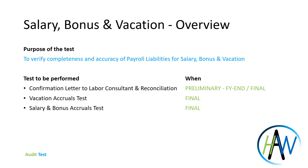The optimal procedure to perform to mitigate the risk of material misstatement is a matter of professional judgment of the auditor, and therefore it is based on the entity, the information available, the risk assessment, and the audit plan.